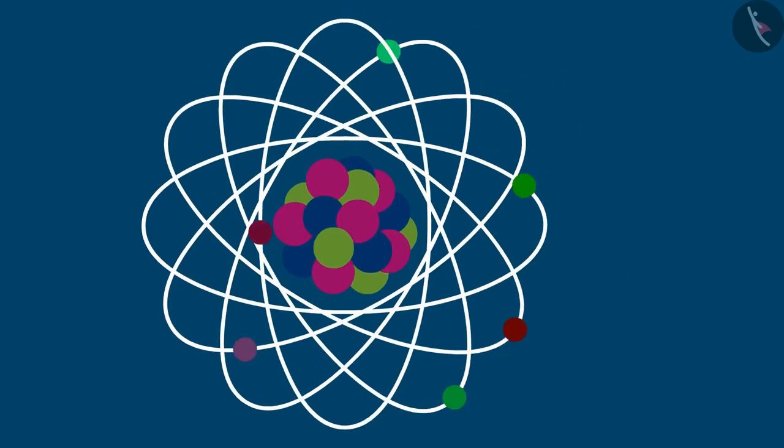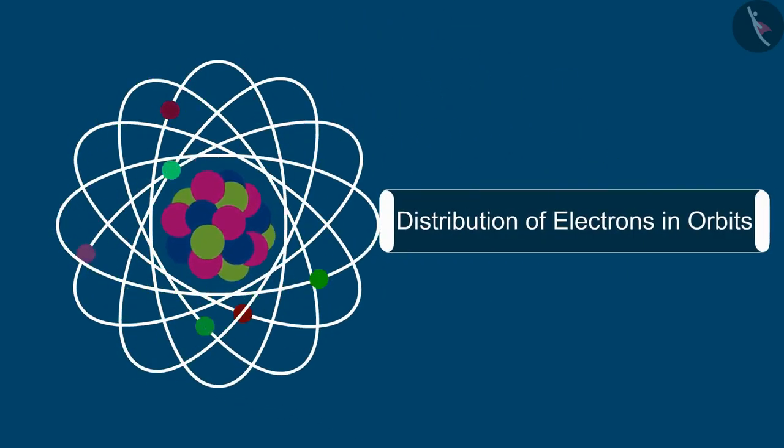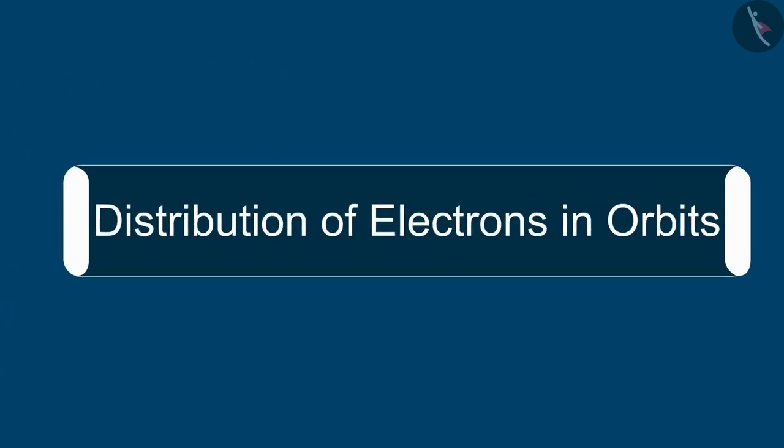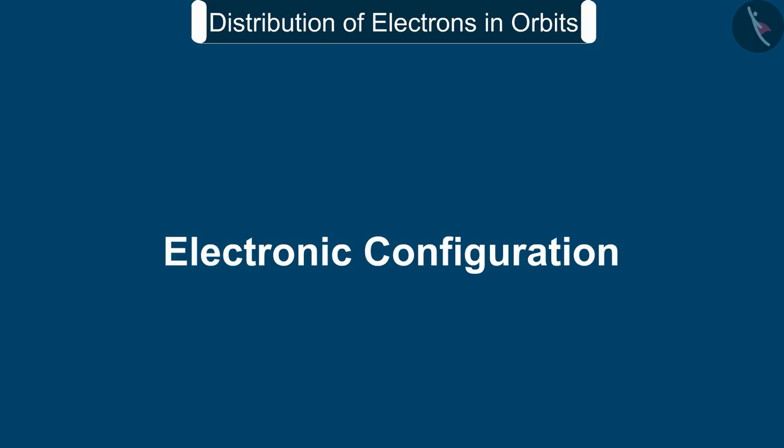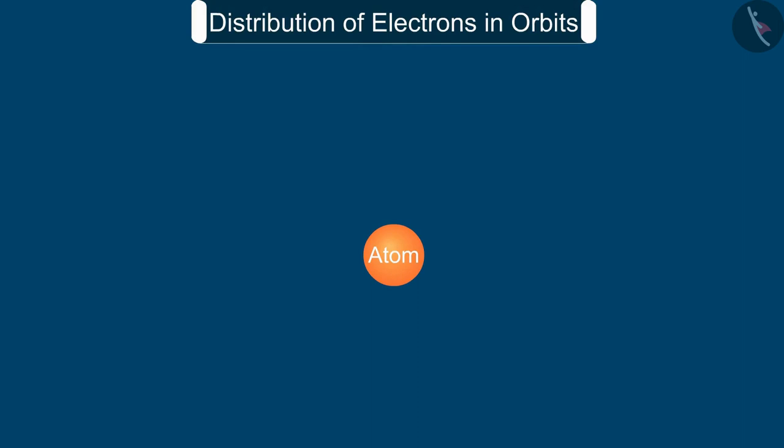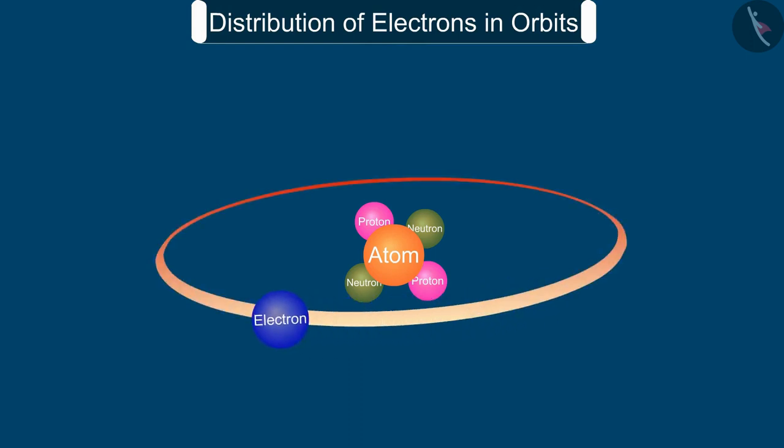Hello friends, welcome to this video session. The topic we are going to study in this session is the distribution of electrons in orbits, we also know it as electronic configuration. In the previous video we saw that the protons and neutrons in an atom exist in its nucleus and electrons revolve around the nucleus in well-defined orbits.